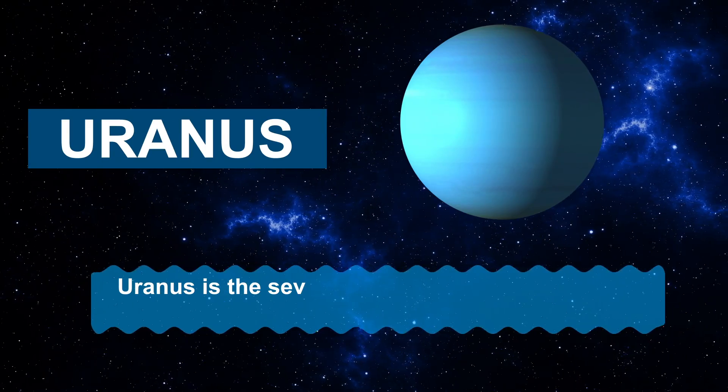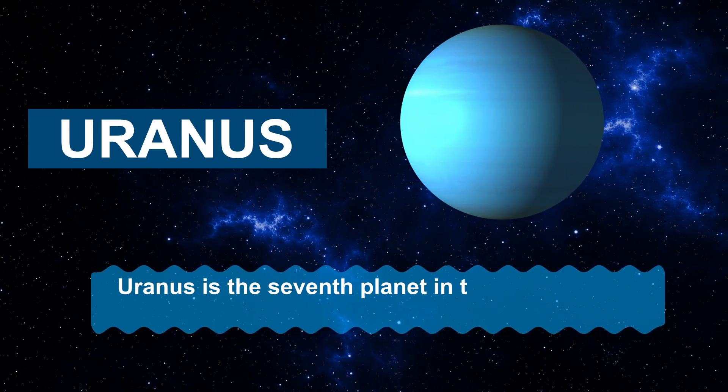Uranus is the seventh planet in the Solar System. It looks like a green-blue ball.